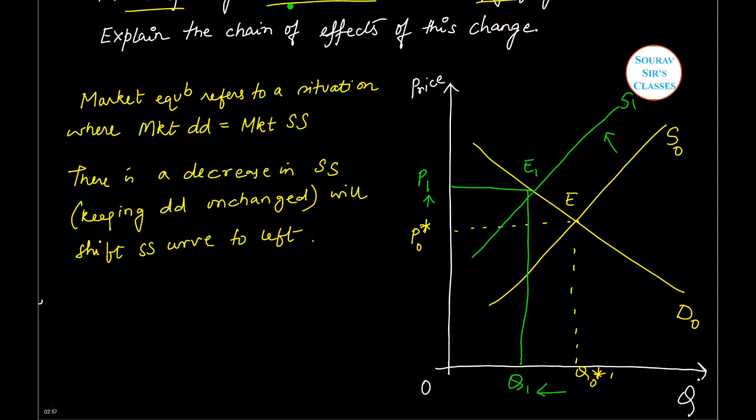Let us write: causing rise in equilibrium price and fall in equilibrium quantity, which is very much visible.